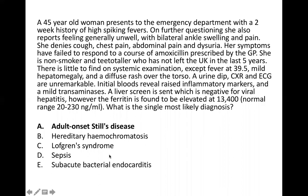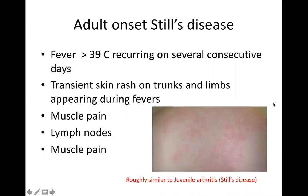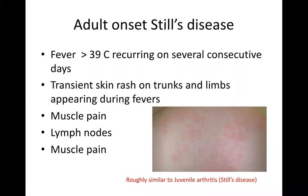Adult onset Still's disease: you get fever over 39 degrees on several occasions, transient skin rashes, muscle pain, and lymphadenopathy. You get a salmon pink rash on the trunk and limbs. There's a spectrum with the paediatric world — juvenile idiopathic arthritis is related. Very rare, but important for diagnostic decision-making. If someone has very high fevers, you wouldn't expect hereditary haemochromatosis, so that's an important exam technique point.